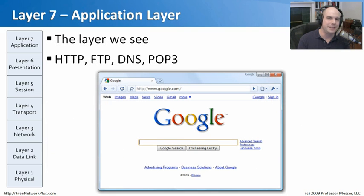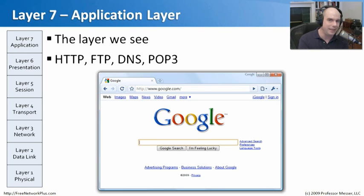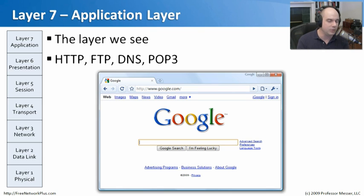Layer 7 is the application layer — the layer that the human being actually sees. Layer 1 is the physical layer we can touch; layer 7 is what appears on screen. It might be a browser, a file transfer program, or an email client. This is the final piece: actually using the application on the desktop to interact with the network.